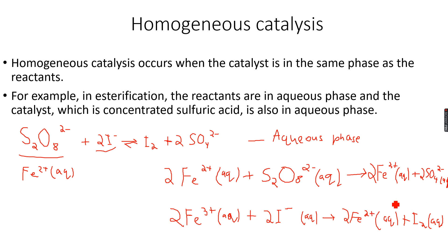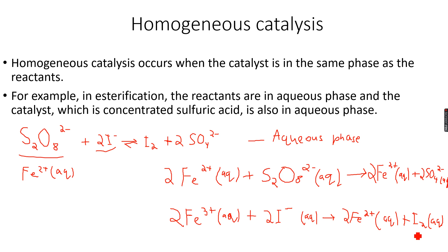In the second reaction, the Fe³⁺ ions produced in the first reaction react with iodide ions. The Fe³⁺ ions are reduced back to Fe²⁺ ions and the iodide ions are oxidized to iodine. As you can see, the catalyst is regenerated at the end of the reaction.